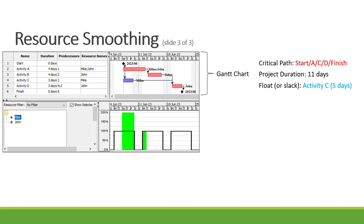Let's have a look at an example. In this example we've got activities A, B, C and D, where activity A and C are connected to start. The duration of A is four days and the duration of C is three days. Activity B is connected to A with a duration of four days, and both activity B and C are connected to D, with D having a duration of three days. Our critical path is A, B and D, so the project duration is four plus four plus three — eleven days. Activity C has a float of five days, so activity C can be delayed by five days before it will have an impact on our critical path.